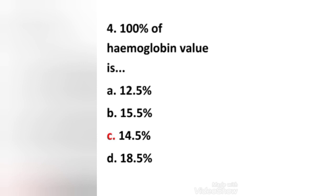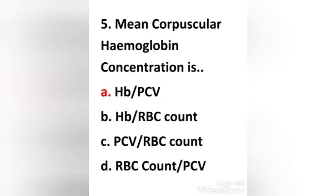Next question: 100 percentage of hemoglobin value is — (a) 12.5%, (b) 15.5%, (c) 14.5%, (d) 18.5%. The right answer is option C: 14.5%. Next question: Mean corpuscular hemoglobin concentration is — (a) hemoglobin by PCV, (b) hemoglobin by RBC count, (c) PCV by RBC count, (d) RBC count by PCV. The right answer is option A: hemoglobin by PCV.